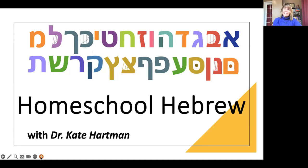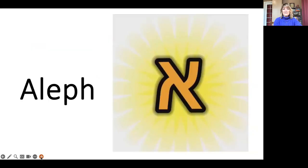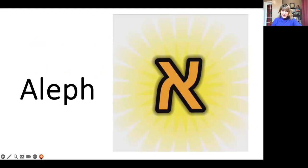On my screen right now, you can see the Hebrew alphabet in lots of colors, and the letter on the far right at the top is the Aleph, which is the first letter in the Hebrew alphabet. See if you can remember — that's right, it's a silent letter, but it borrows sounds from all different kinds of vowel sounds.